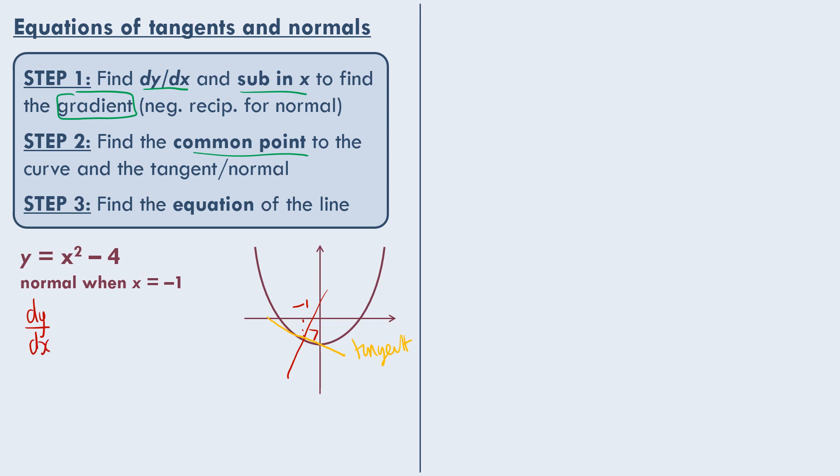To find this, first we can differentiate to find dy by dx. So taking the power down there, we get 2x, and taking 1 from the power, 2x to the power 1. Your 4 here actually has an x to the power 0, and so when you take 0 down, you end up with nothing. So our derivative is just 2x. We need to find the gradient of first the tangent at x equals minus 1. So dy by dx when x equals minus 1 equals 2 times minus 1, which is minus 2. So that's the gradient of the tangent there. So the tangent has gradient minus 2. So the normal will have the negative reciprocal, so that would be a half.